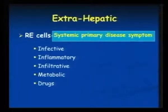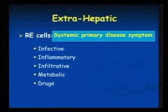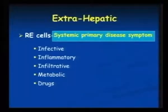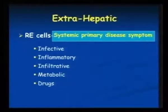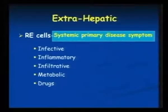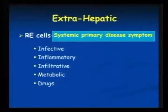Inflammatory conditions — yes, collagen vascular disorders can involve RE cells, causing hepatosplenomegaly, not hepatocytes. Infiltrative conditions — many, like histiocytosis, leukemias — can all involve RE cells in the liver, not the liver cells. And finally, metabolic conditions and drugs, especially corticosteroids, can involve RE cells, not hepatocytes.